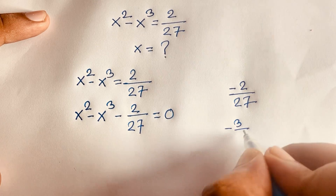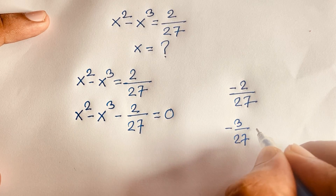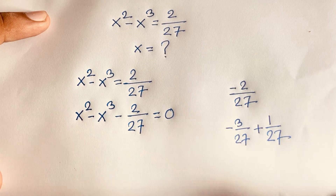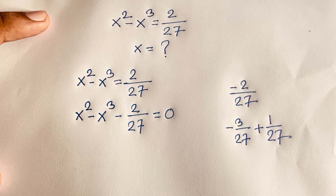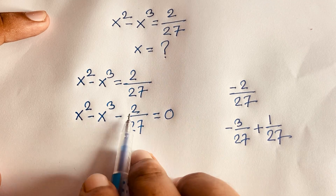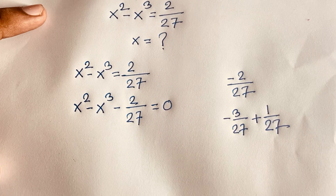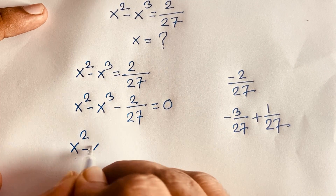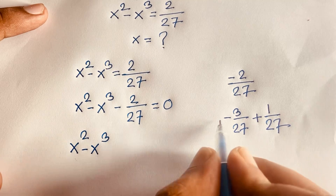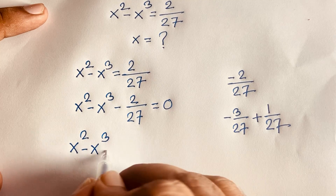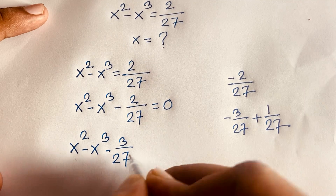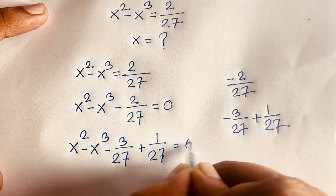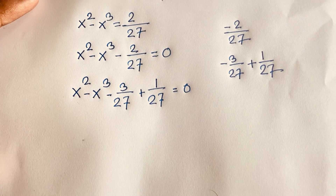I can decompose minus 2 over 27 as minus 3 over 27 plus 1 over 27, because minus 3 over 27 plus 1 over 27 gives minus 2 over 27. So the expression becomes x to the power (x squared minus x cubed) minus 3 over 27 plus 1 over 27 is equal to 0.